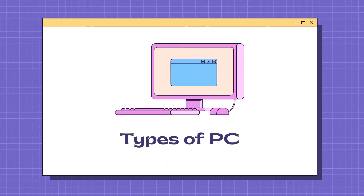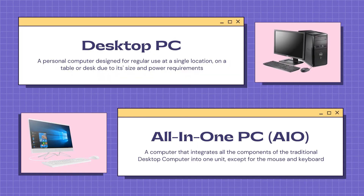We will now move on to the types of personal computers. The desktop PC is a personal computer designed for regular use at a single location, such as a table or desk, due to its size and power requirements.